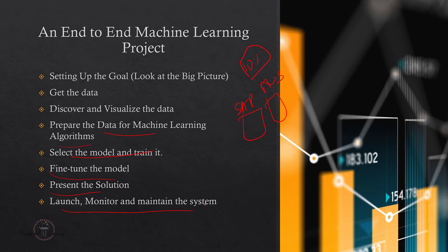This is what a typical end-to-end machine learning project flow looks like. We start with setting up the goal and go all the way to launching, monitoring, and maintaining the system. In our upcoming learning journey we'll follow the same sequence: set the goal, get the data, discover and visualize the data, prepare it for ML algorithms, select and train the model, fine-tune it, present the solution, and monitor the system.